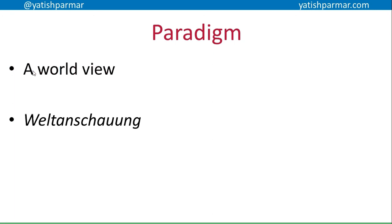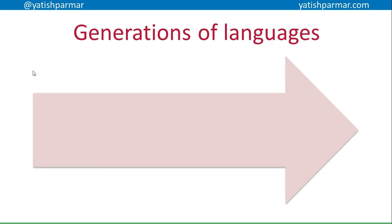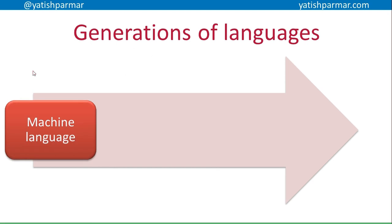Historically there have been different ways of looking at the development of programming languages. One way is looking at generations of languages, where we started off with the first generation: machine language, where you programmed in binary using the opcodes. You were literally using the instruction sets as understood by the CPU — this opcode, this data address, this memory address — and you were manipulating memory directly. Obviously that's a very difficult way to program, very prone to errors.